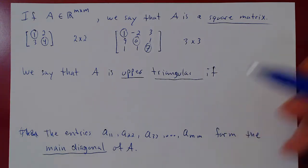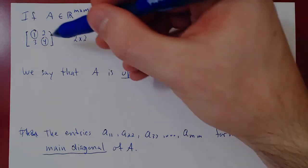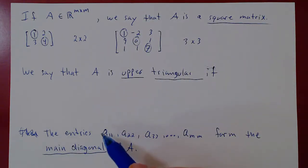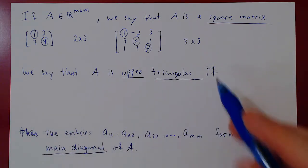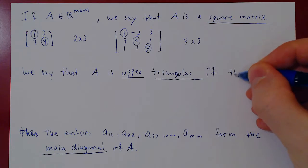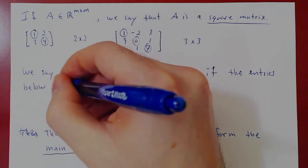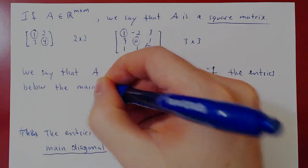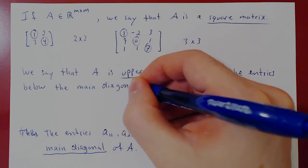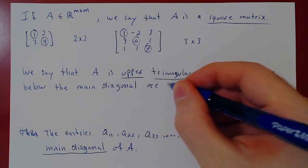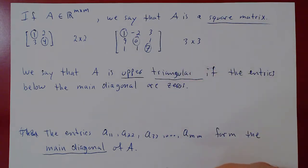A is upper triangular if the entries below the main diagonal are all zeros. The entries on the diagonal can be anything, and the entries above can also be anything, but the entries below the main diagonal have to be zeros. For example, a 2 by 2 upper triangular matrix has the diagonal and above free, with the below-diagonal entry forced to zero.